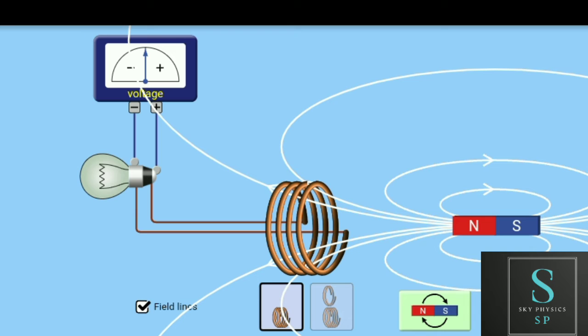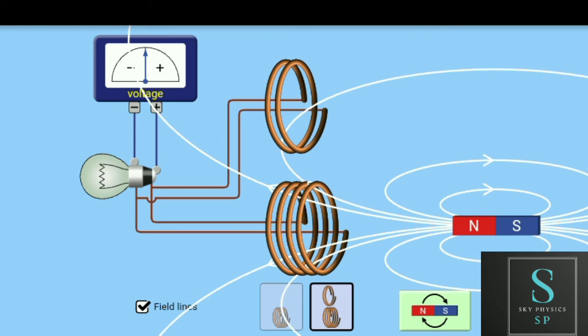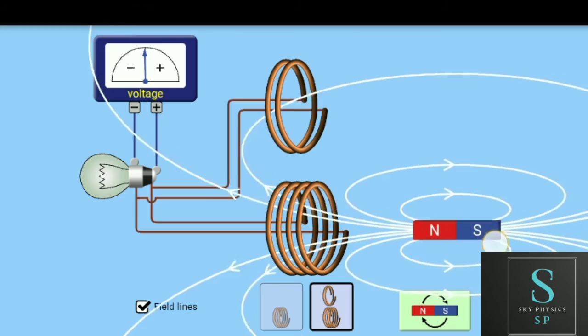What will happen if we are considering two loops? When we're looking at the coil with the same direction, we will have two loops and we pass the magnet through.